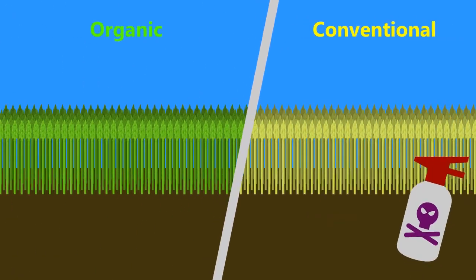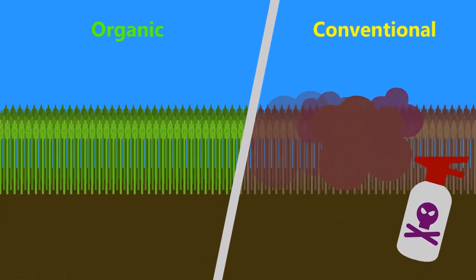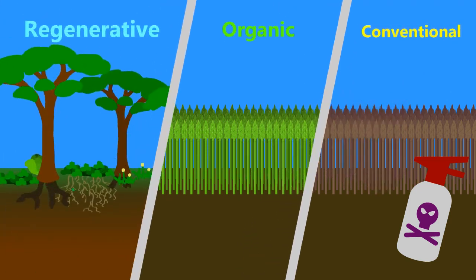Even organic agriculture, while not as bad, still does more harm than good. Regenerative agriculture is a way to reverse this trend to actually make a positive impact on the land.